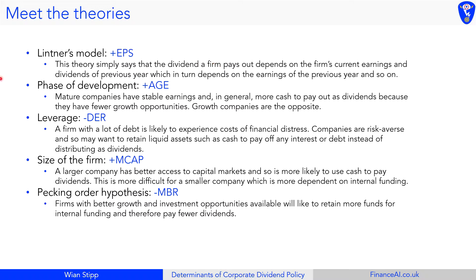The next theory is phase of development. This says that mature companies have more stable earnings and in general are able to pay out more cash dividends because they have fewer growth opportunities. This suggests that the more mature a company is — using age as a proxy — the higher the dividend yield.